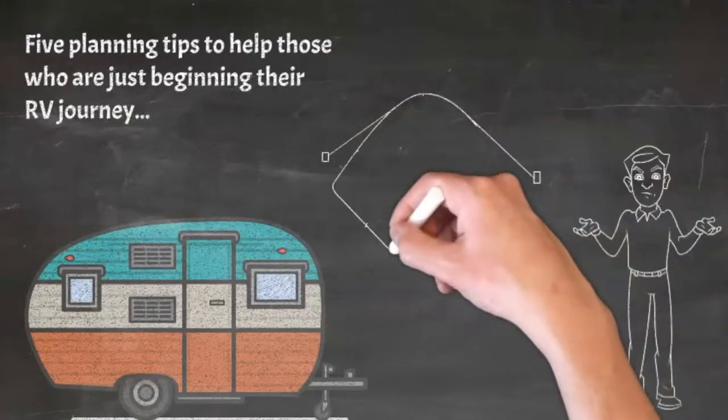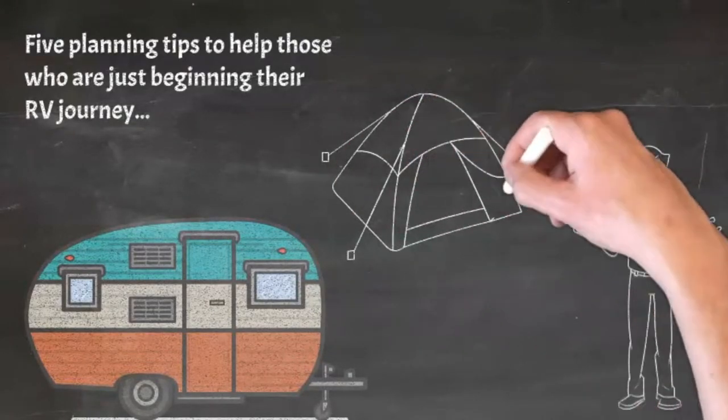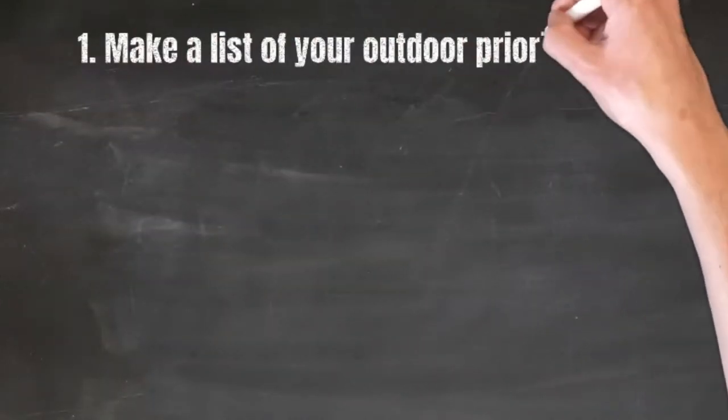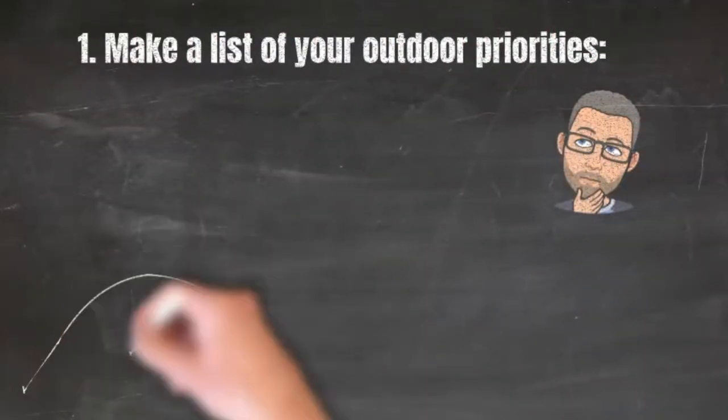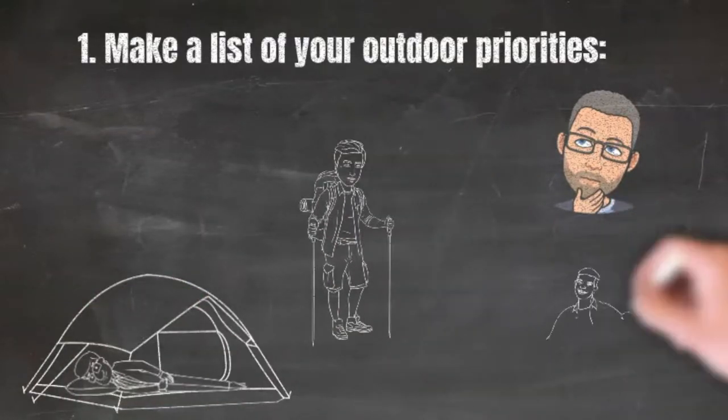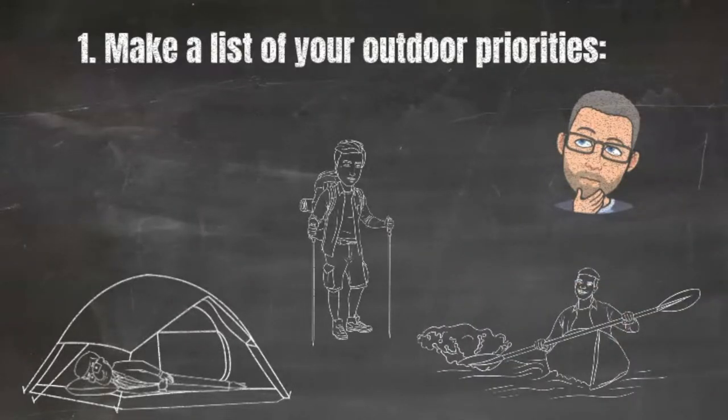Number one: Make a list of things you like to do outdoors. Do you want to go camp and sleep outdoors? Do you like to go hiking, biking perhaps, or swimming, kayaking? Or maybe you already have some off-road bikes or ATVs that you want to get out and enjoy.